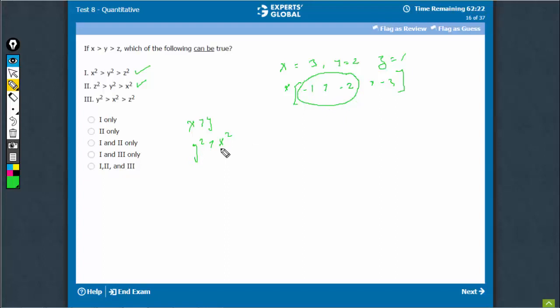On squaring, y square becomes greater than x square, but then what this means is that z is an even more negative number. It has larger magnitude and therefore z square will be even bigger than y square always. It can never be less than y square or x square for that reason. So this condition cannot be met.